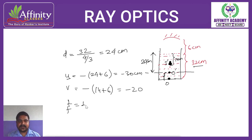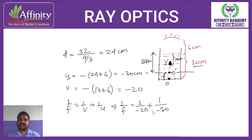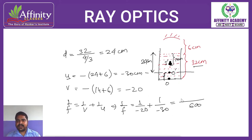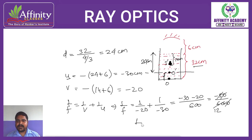Using the mirror formula: 1/f = 1/v + 1/u. Substituting: 1/f = 1/(-20) + 1/(-30). This gives minus 30 plus minus 20 in the numerator over 600, which simplifies to minus 50 over 600, equal to minus 1/12. So the focal length is minus 12 centimeters, meaning the focal length is 12 centimeters. The answer is option number 2.